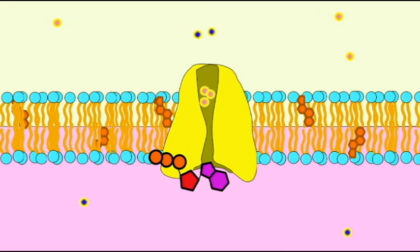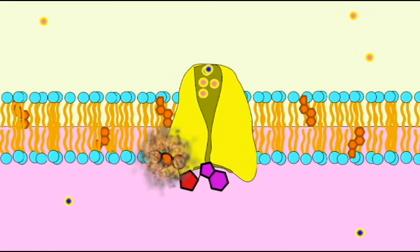And it pumps potassium ions from outside of the cell, into the cell, two at a time.